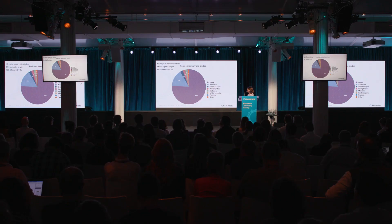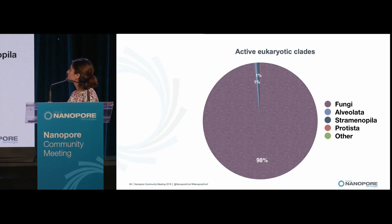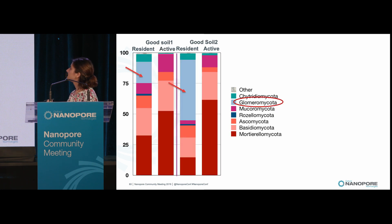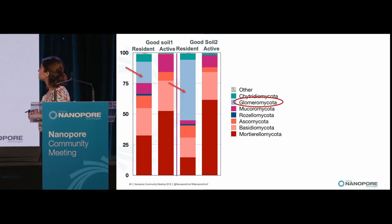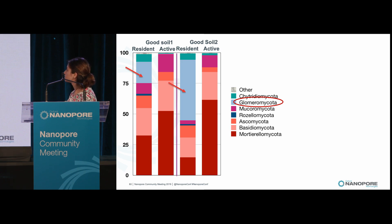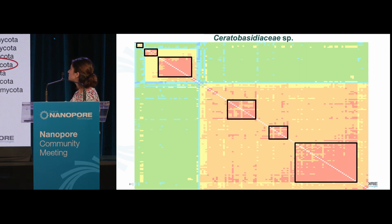We saw that 19 major eukaryotic clades were detected and 70% of the resident community was represented by fungi, whereas the active community was mostly fungi. We observed in our forest soil controls that the resident community is different from the active community, as seen here, and our high productivity soils were enriched with Glomeromycota species that are beneficial fungi and help provide nutrients to the plants, whereas low productivity soils were enriched with fungal pathogens.